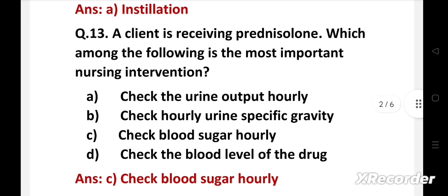Right answer is option C: Check blood sugar hourly. Prednisolone causes increase in blood sugar, so the nurse needs to check hourly blood sugar level. The abrupt withdrawal of the drug needs to be avoided because it will lead to insufficiency of adrenal cortical hormones.